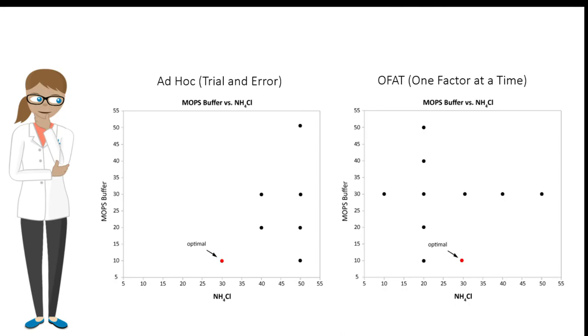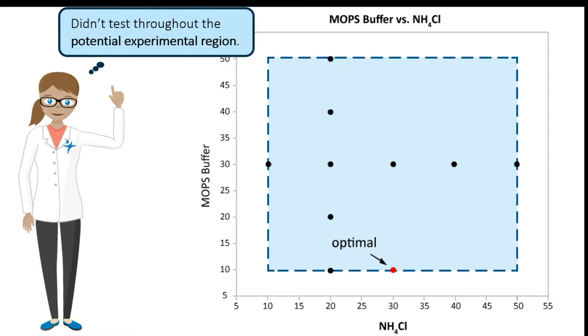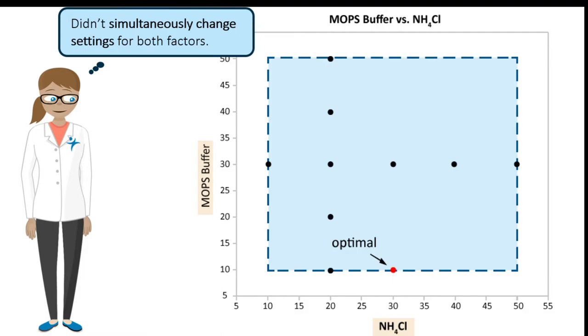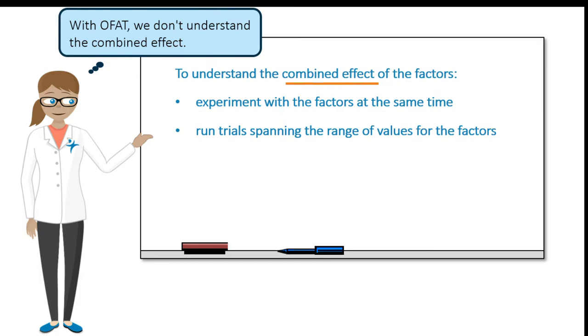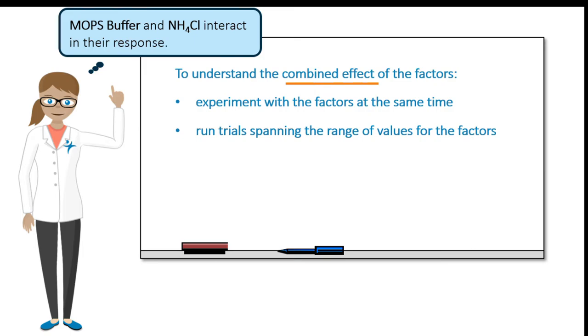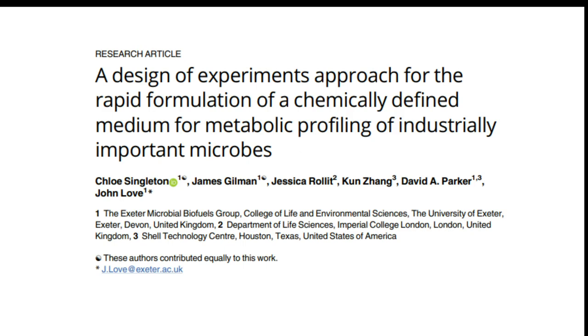Neither the ad hoc experimentation nor the two OFAT designs led Anna to the optimal settings. What went wrong? Anna didn't conduct trials throughout the potential experimental region and she didn't simultaneously change the settings of both factors. Because of this, Anna doesn't understand the combined effect of the two variables on the response. Anna has no idea whether the two factors interact in their effect on the response.